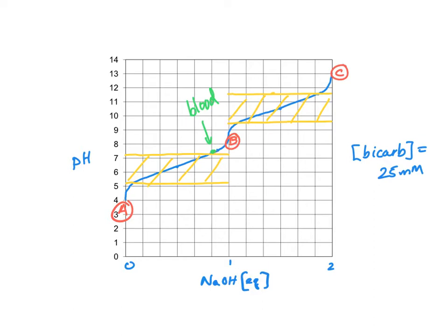We also found that bicarb has a very high concentration in blood at 25 millimolar, so the capacity is going to be good, especially on the acidic buffering.